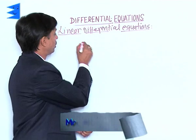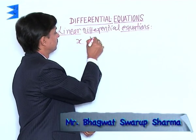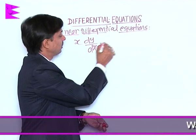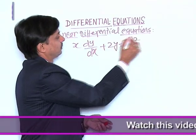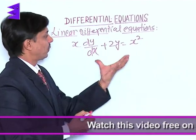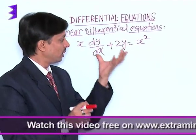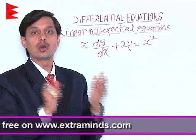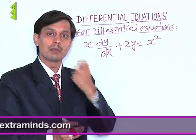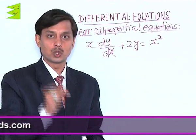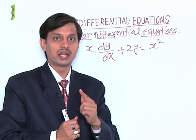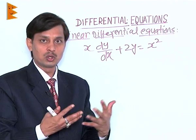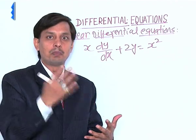The problem is x·(dy/dx) + 2y = x². The very first step we need to check is whether this question requires a direct approach, homogeneous, or linear method. Since we are discussing problems based on linear differential equations, you need to think about how to bring it into that shape. The standard form is dy/dx + Py = Q.